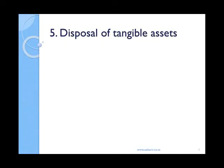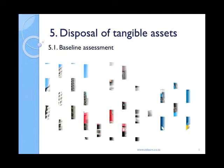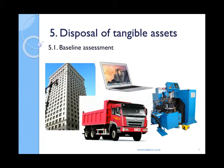Chapter 5: disposal of tangible assets. If you haven't already worked through baseline assessment 5.1, please do so now and then check your answers against the solutions. Tangible assets, which are sometimes also known as fixed assets, are the assets that a business buys in order to use to generate income — for example, land and buildings, vehicles such as a truck, equipment such as a laptop or cell phone, and machinery used in a factory. All of these assets must be carefully managed and controlled to ensure they perform as cost-effectively as possible while generating the income needed.